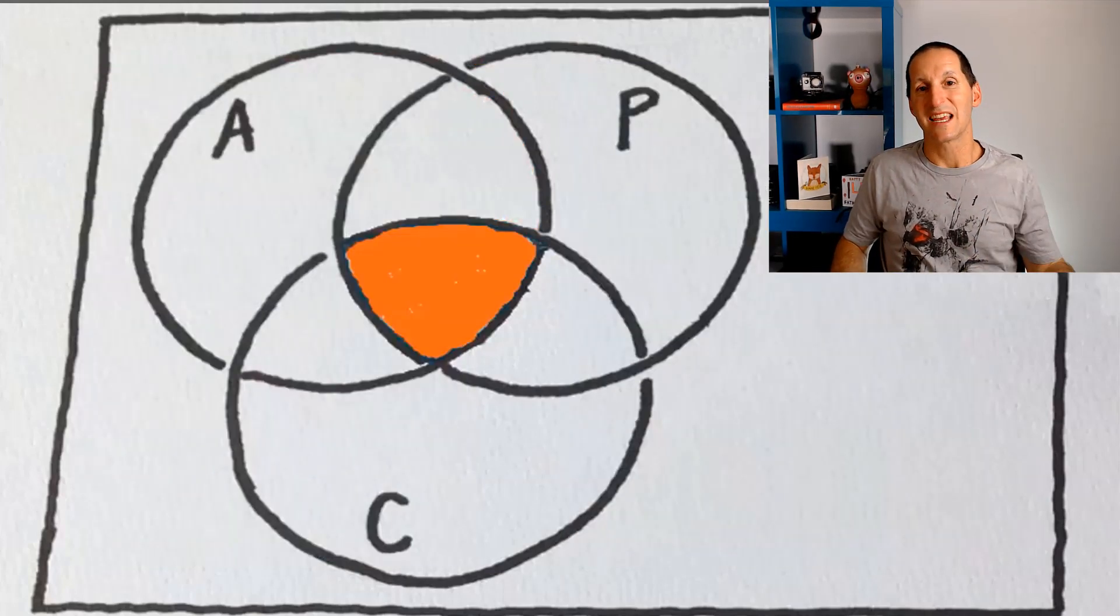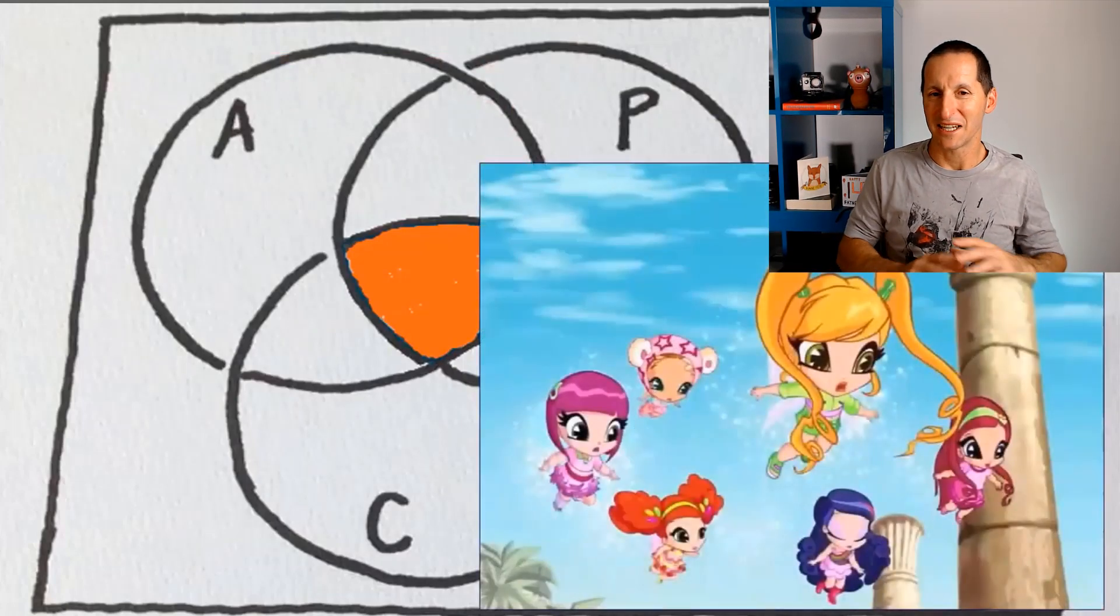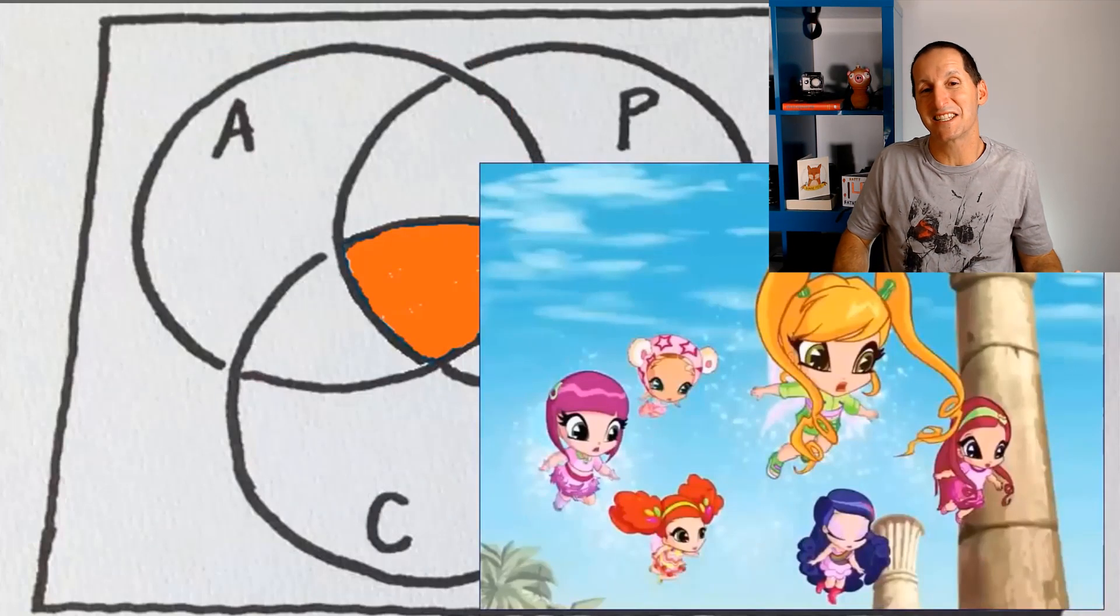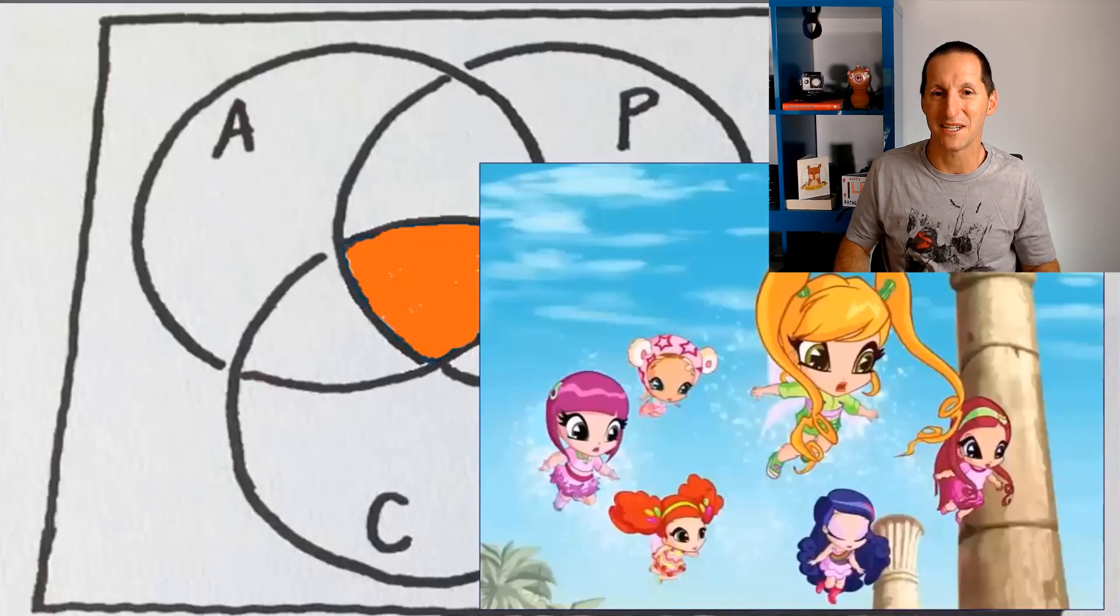That leaves us onto this third option, which is can you have all three? And anyone that claims you can have all three is living in a magical place where fairies and pixies exist. But we'll talk about theoretical concept of having all three available, even though Eric Brewer's theorem says it's impossible.